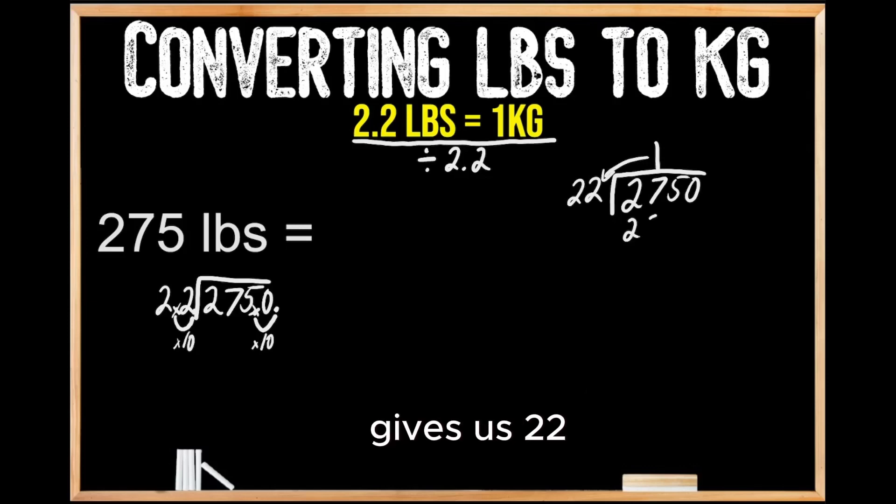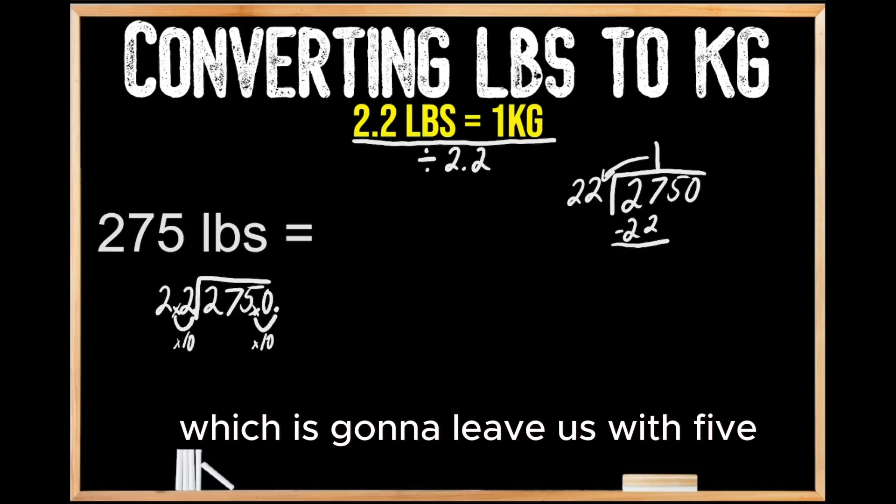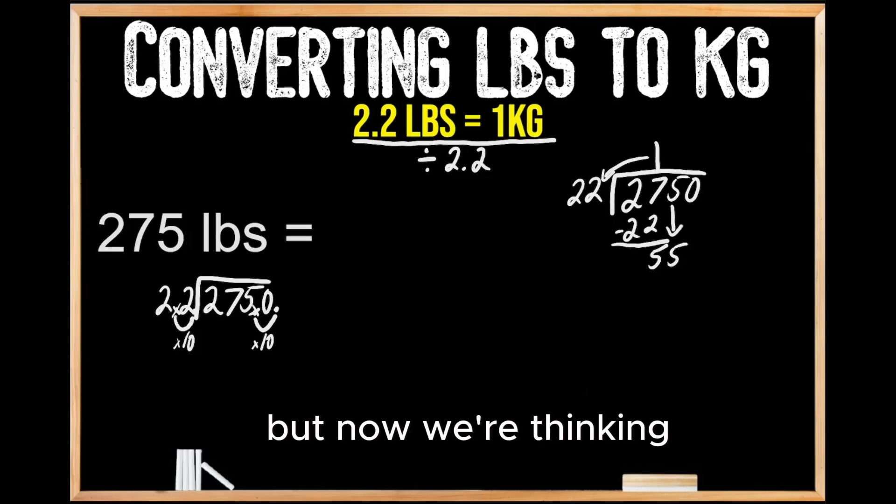1 times 22 gives us 22, and then we're going to subtract 22 from 27, which is going to leave us with 5. Then we're going to bring down the digit that's immediately to the right and repeat this process. Now we're thinking how many groups of 22 can we make out of 55?